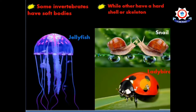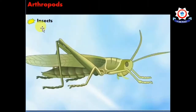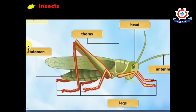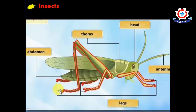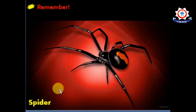The most numerous among arthropods are insects. Insects are the most diversified group of animals in the world. The body of all insects is divided into three parts: head, thorax, and abdomen. All insects have a pair of antennae and three pairs of legs on their thorax. Remember, a spider is not an insect — it has four pairs of legs, meaning eight legs instead of six.